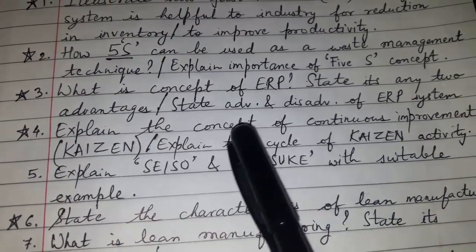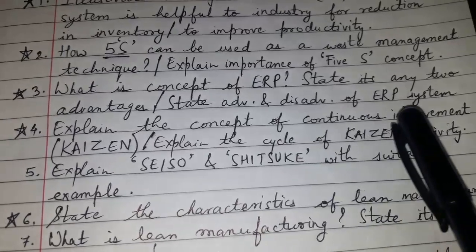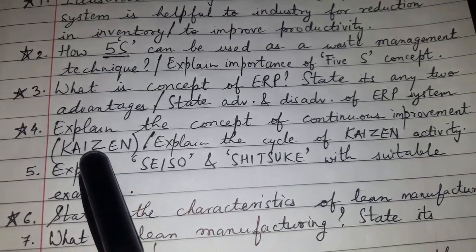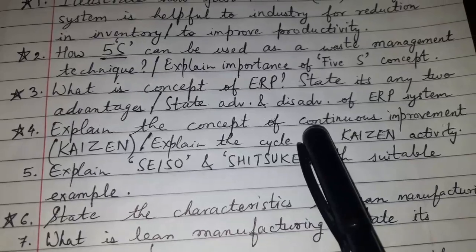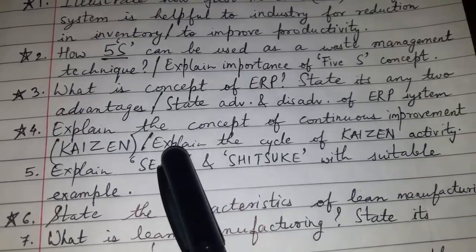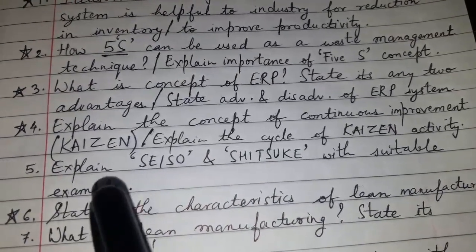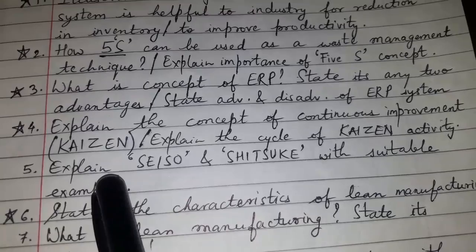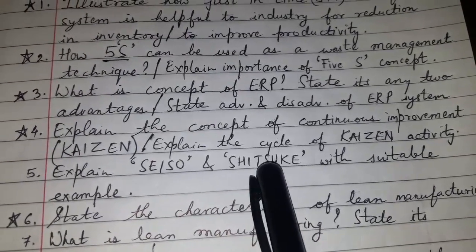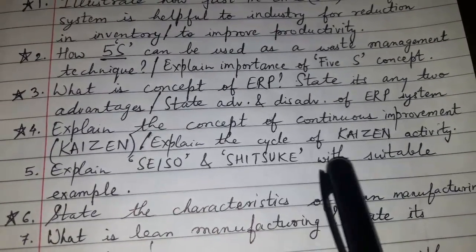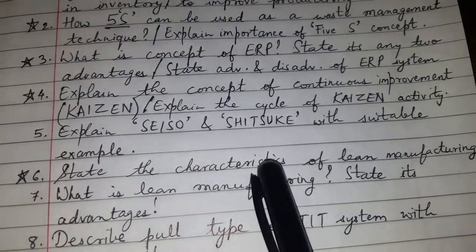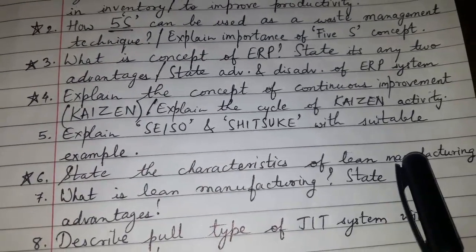Explain the concept of continuous improvement, also called Kaizen. Explain the cycle of Kaizen activity. This type of question can also be asked: explain Seiso or Sitsuke with a suitable example.